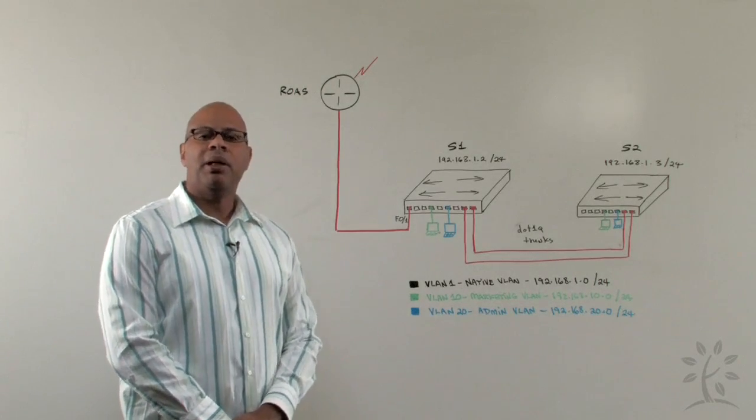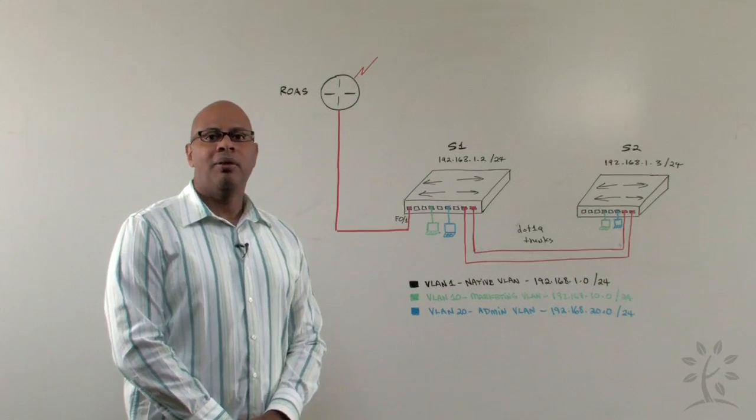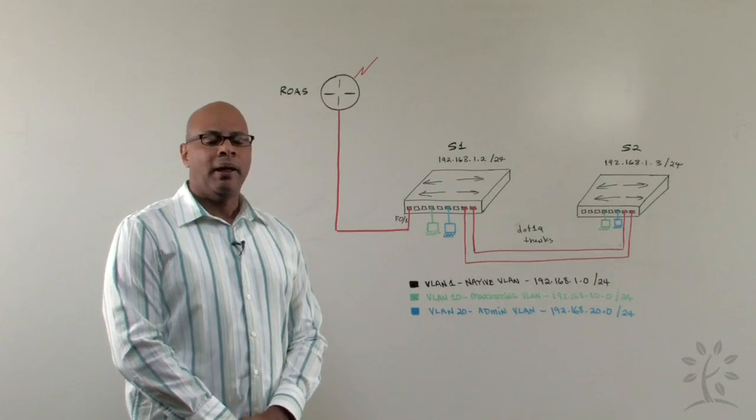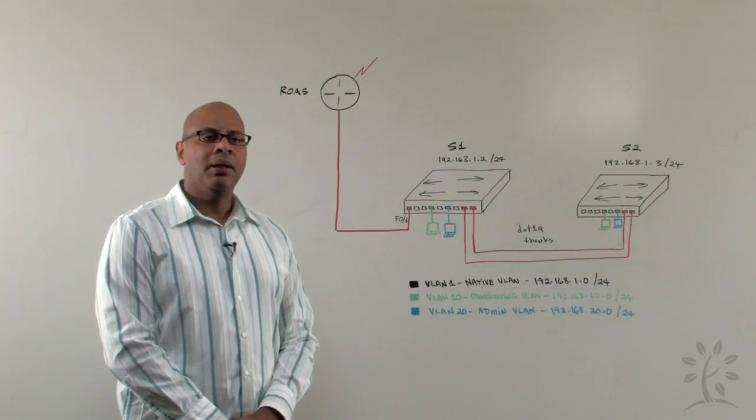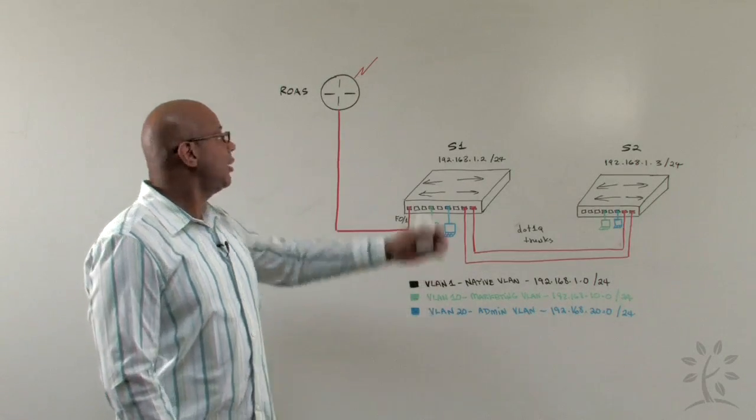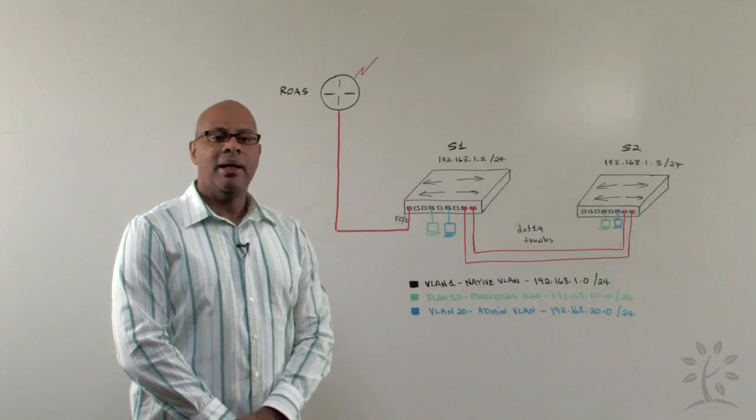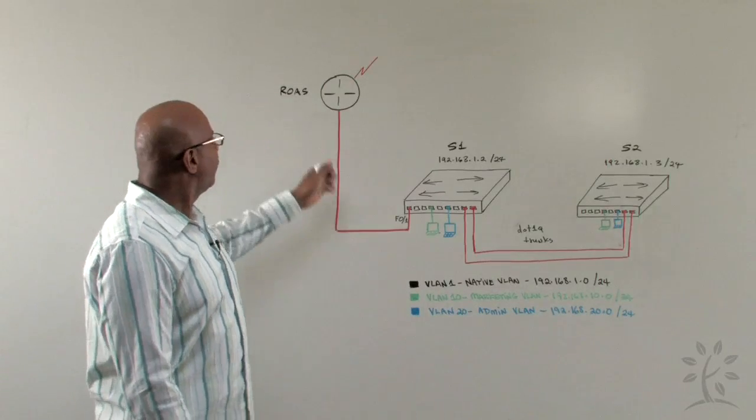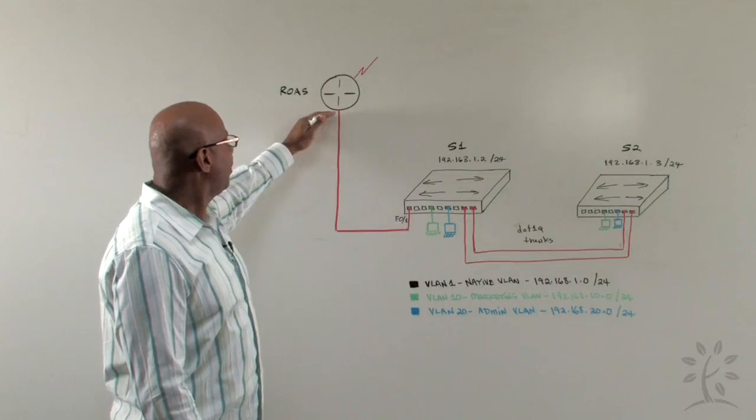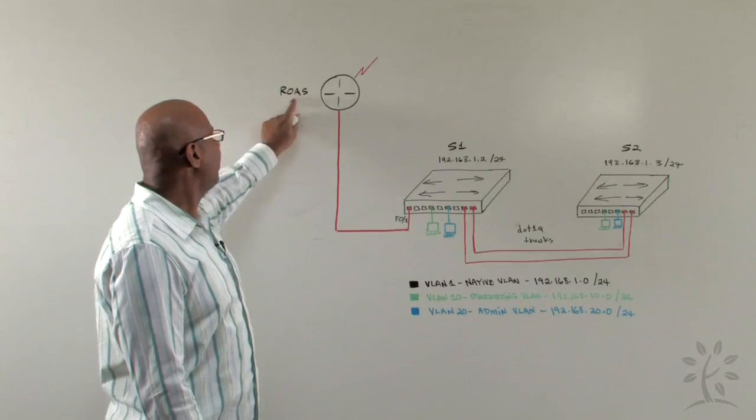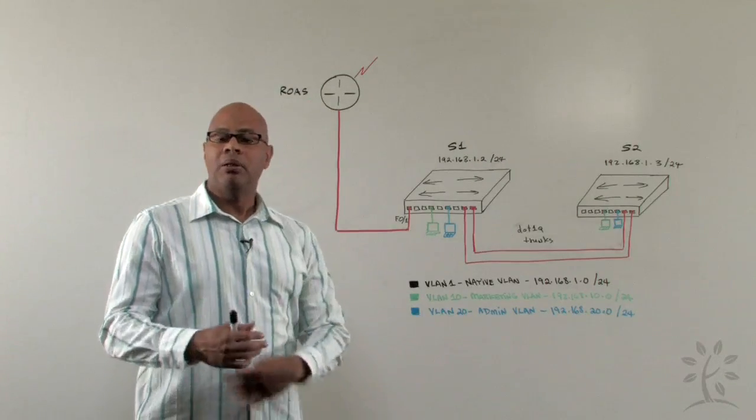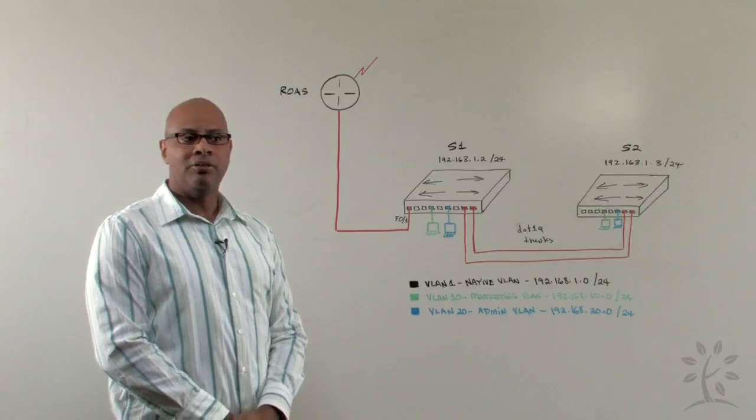Inter-VLAN routing is a process used to allow VLANs to intercommunicate with each other. At this particular time, we need a Layer 3 device or a router to make that happen. So we're going to be going through some configurations of how to configure this particular router. We're calling it ROAS, router on a stick, how it needs to be configured to allow inter-VLAN routing.